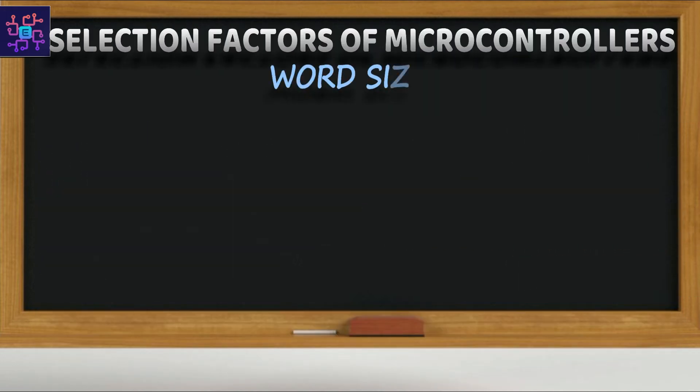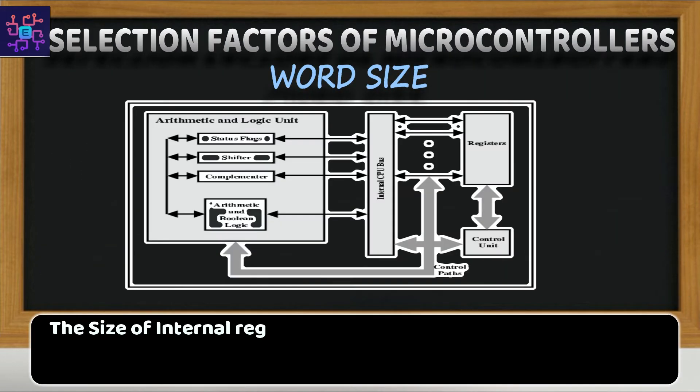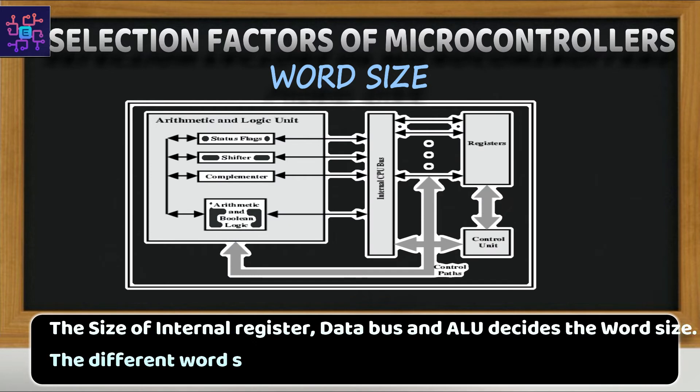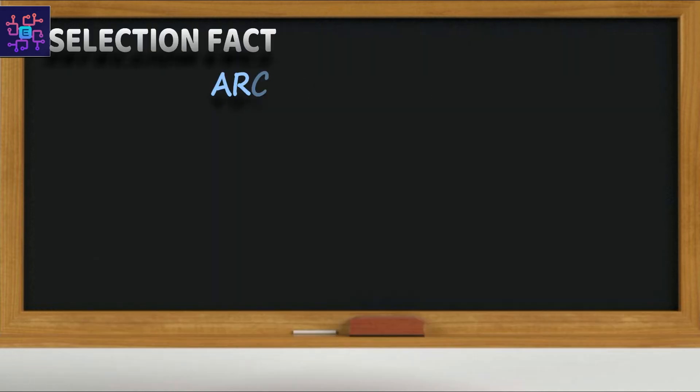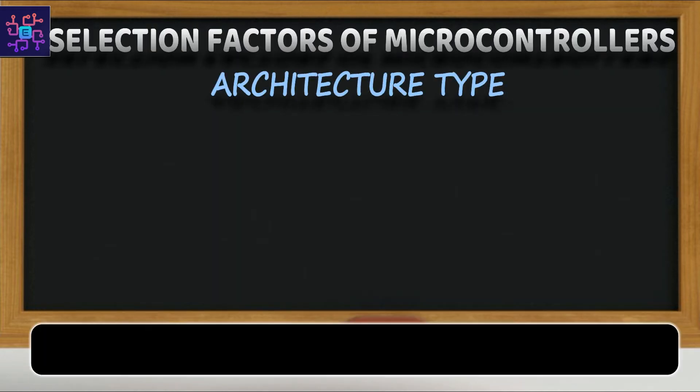Sixth is the word size. The size of internal register, data bus and ALU will decide the word size. The different word sizes in microcontroller are 8-bit, 16-bit, 32-bit, 64-bit, etc. The seventh and the last one is the architecture type.